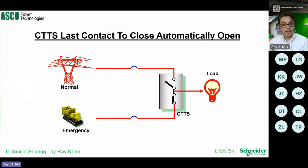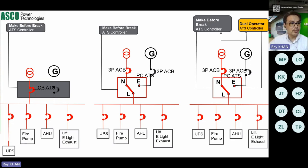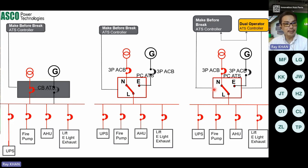Comparing make-before-break using circuit breakers versus ATS: on the left, ATS made from circuit breakers — if the controller fails, the circuit breaker can no longer function. In the center, an ATS with only one controller — if the controller fails, the ATS cannot function. On the right, an ATS with dual controllers: the first controlled by the normal supply position, and the second controlled by the emergency supply position, providing redundancy.